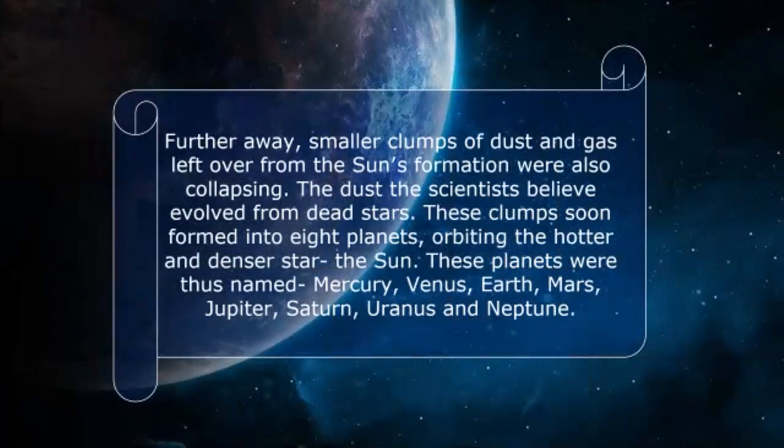Further away, smaller clumps of dust and gas left over from the sun's formation were also collapsing. The dust, scientists believe, evolved from dead stars — the dust that came from stars that are no longer alive. These clumps soon formed into eight planets orbiting the hotter and denser star, the sun. These planets were thus named Mercury, Venus, Earth, Mars, Jupiter, Saturn, Uranus, and Neptune. These names came from the gods of Roman and Greek mythology.